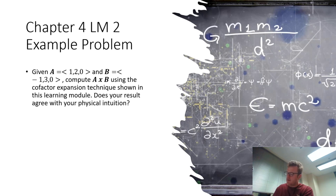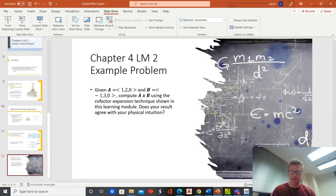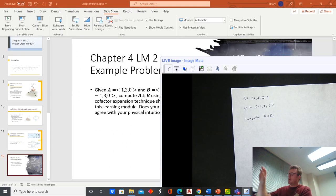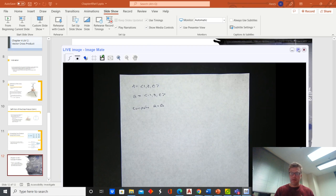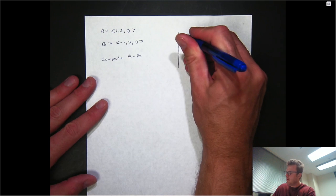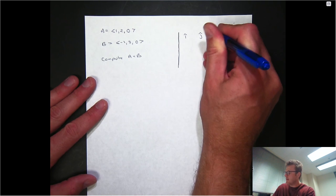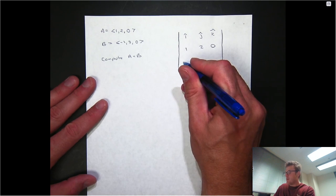Let's do an example problem. We're given two vectors: A = (1, 2, 0) — meaning it lives totally in the x-y plane — and B = (-1, 3, 0). We want to compute A cross B using that cofactor expansion and then ask whether our result matches physical intuition. To set up, we form the three-by-three matrix with I hat, J hat, K hat in the first row, the components of A in the second row, and the components of B in the third row. The order matters: this is A cross B, so if it were B cross A we would flip the two rows.